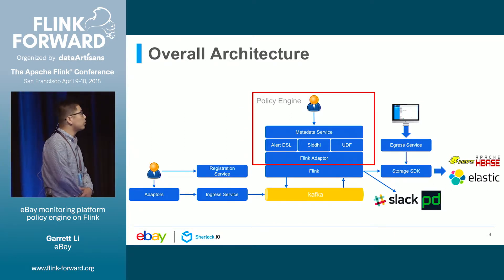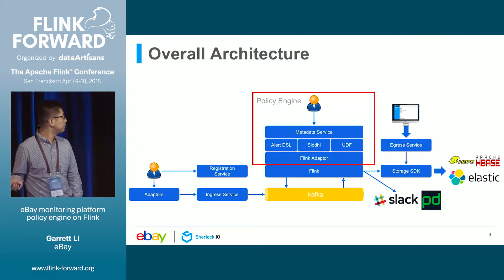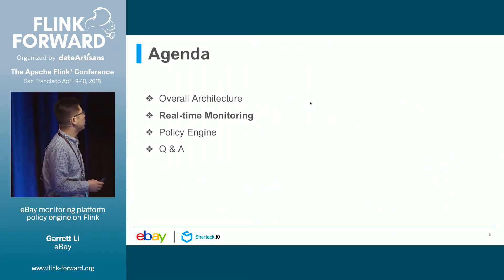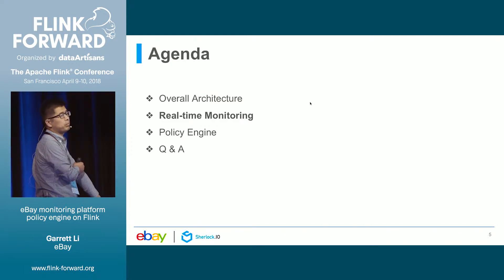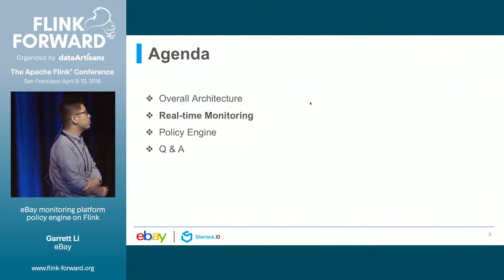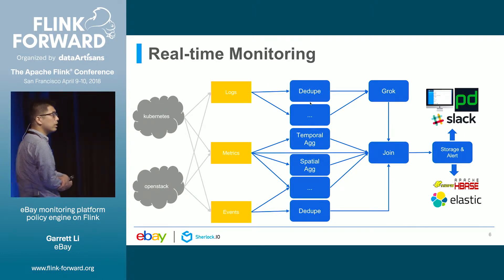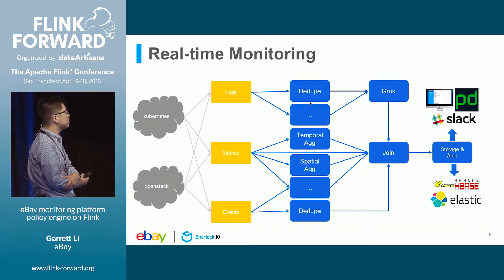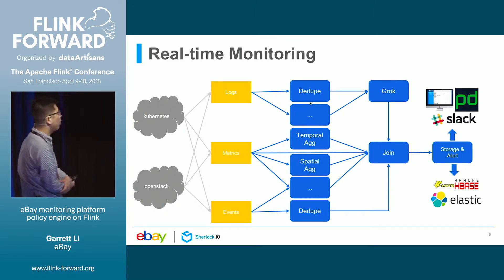Before we talk more about the policy engine, let's take a look at the typical real-time monitoring use case. In eBay, we have two cloud computing solutions: Kubernetes and OpenStack. For Kubernetes, we developed the collect-beats on top of the Elastic beats framework and provide the discovery capability, so we can collect the metrics, events, and logs from the Kubernetes cluster and send to our monitoring platform. For other infrastructures, we deploy metric-beats and file-beats to collect metrics and logs and send to our monitoring platform.